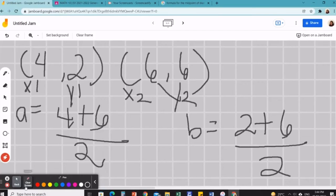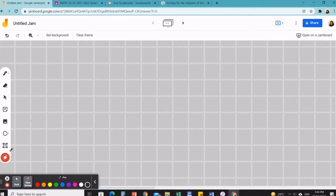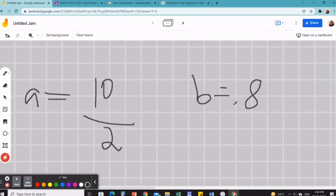So we're going to simplify this. So 4 plus 6 is equal to 10 over 2. And 2 plus 6 is equal to 8 over 2.